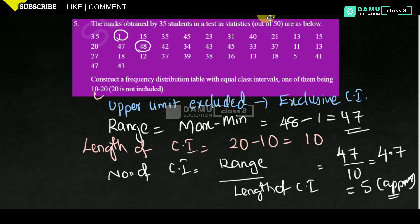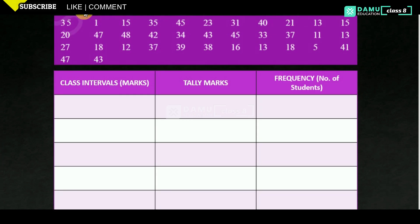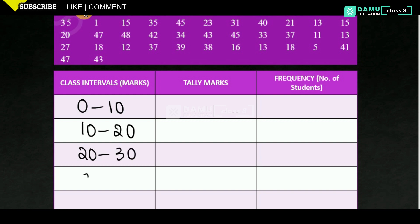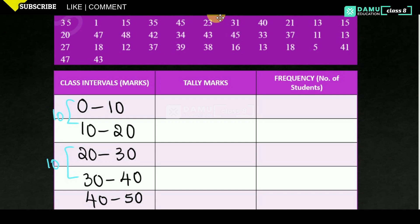Let's construct the frequency distribution table. Class intervals will be: 0–10, 10–20, 20–30, 30–40, 40–50. The difference between each interval is 10, making them exclusive class intervals where upper limits and lower limits are equal across adjacent intervals.